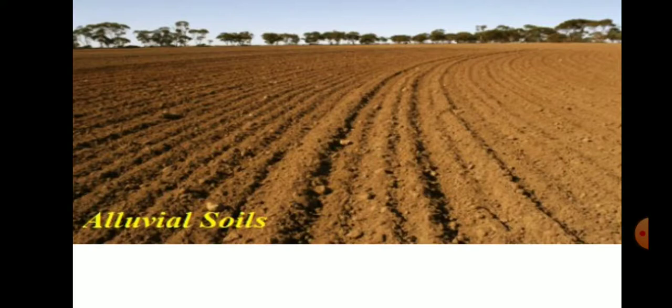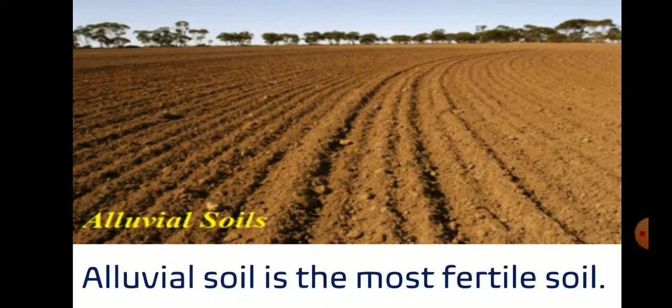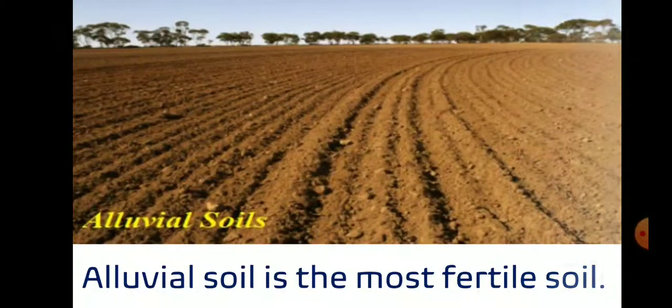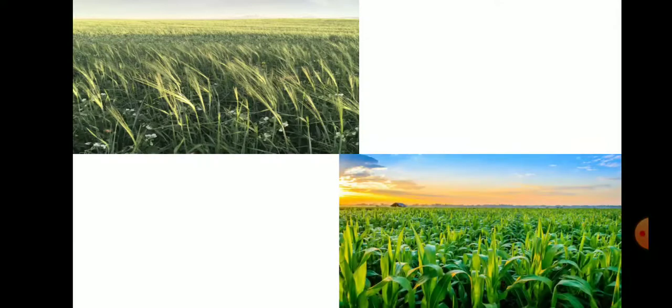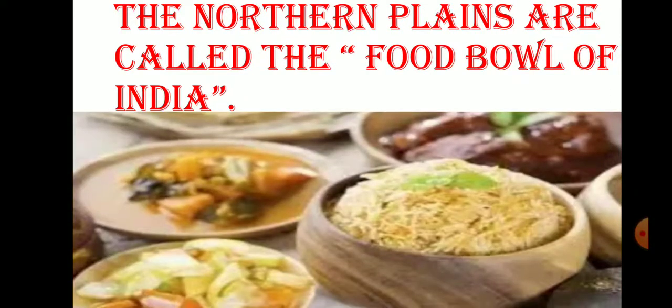The fine silt deposited on the banks is called alluvial soil. Alluvial soil is the most fertile soil and it is good for growing a large variety of crops. That is why the Northern Plains are called the food bowl of India.